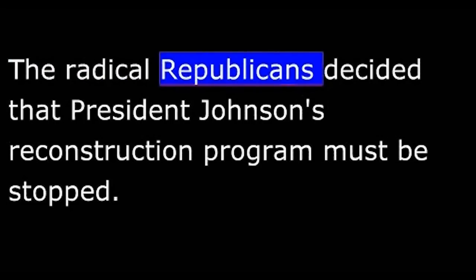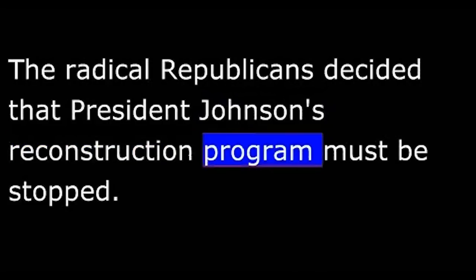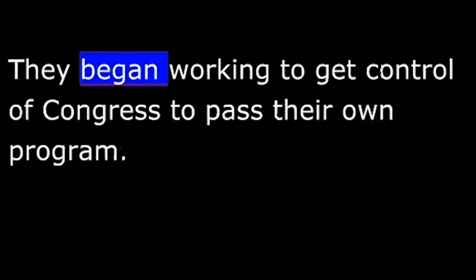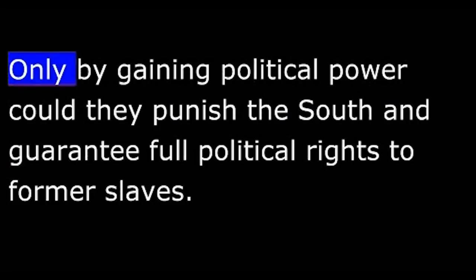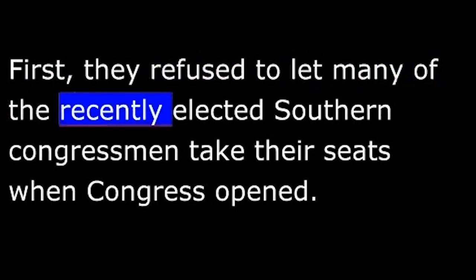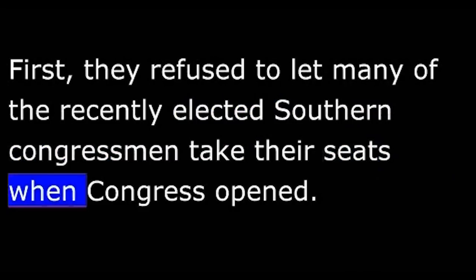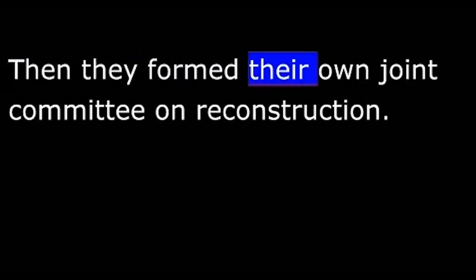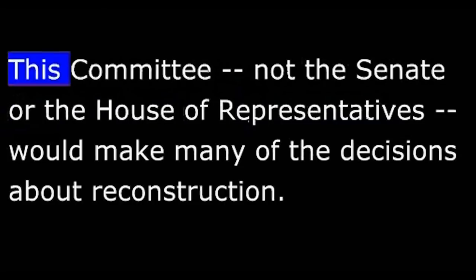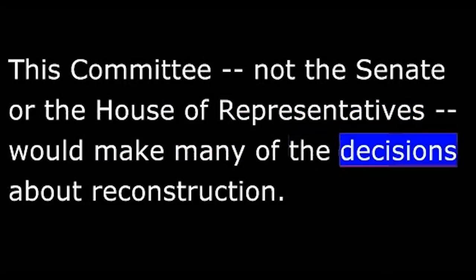Another way the state governments in the South acted against blacks was by refusing to give them the right to vote. The radical Republicans decided that President Johnson's Reconstruction program must be stopped. They began working to get control of Congress to pass their own program. Only by gaining political power could they punish the South and guarantee full political rights to former slaves. The radicals tried to take control in two ways. First, they refused to let many of the recently elected Southern congressmen take their seats when Congress opened. Then they formed their own Joint Committee on Reconstruction. This committee, not the Senate or the House of Representatives, would make many of the decisions about Reconstruction.